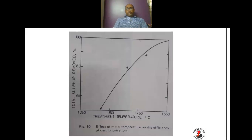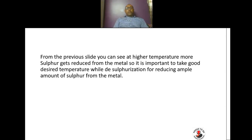This slide shows the effect of metal temperature on desulphurization efficiency. As temperature increases, the total percentage of sulfur removed keeps increasing. Around 1550°C it is almost 100 percent. So it is important to maintain a good, optimum temperature of the metal in the furnace to remove sulfur effectively.